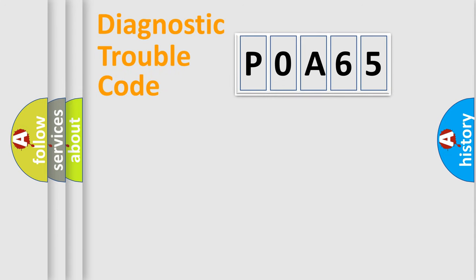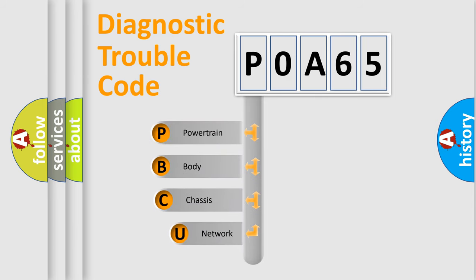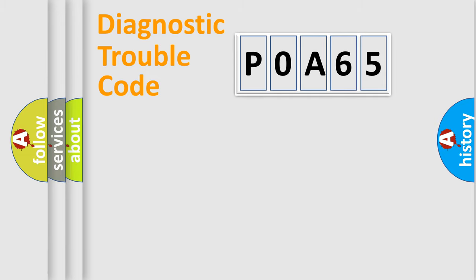Let's do this. First, let's look at the history of diagnostic fault code composition according to the OBD2 protocol, which is unified for all automakers since 2000. We divide the electric system of the automobile into four basic units: Powertrain, Body, Chassis, and Network.